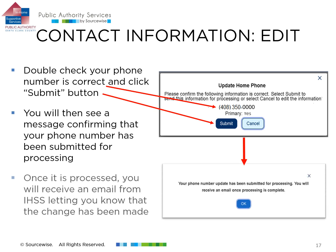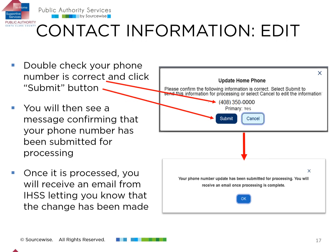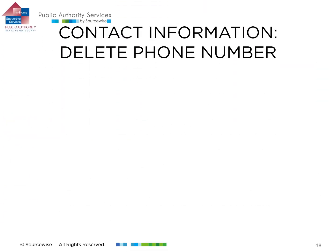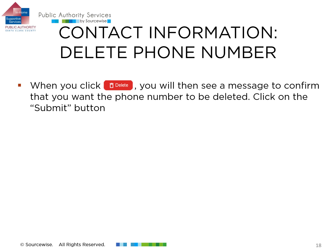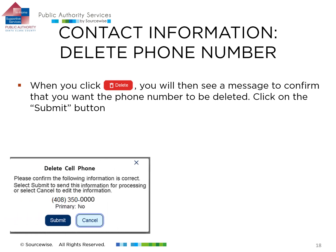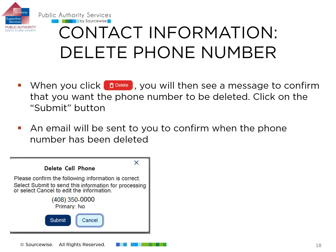When the change has been completed in the IHSS system, you will receive a confirmation email. When deleting a phone number, after you click the Delete button, you will see a message asking you to confirm you want the number deleted from your account. Click the Submit button. When the change has gone through in the IHSS system, you will receive a confirmation email.